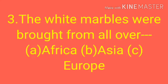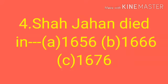Question 3. The white marbles were brought from all over — . Option A: Africa. Option B: Asia. Option C: Europe. Question 4. Shaujahan died in — . Option A: 1656. Option B: 1666. Option C: 1676.